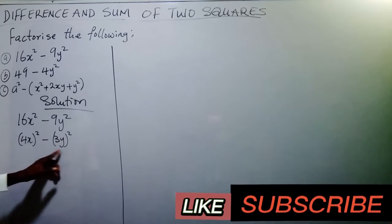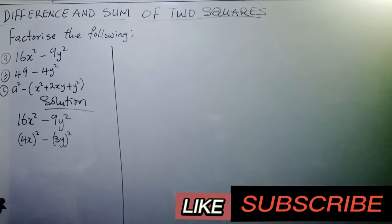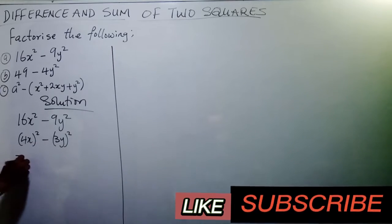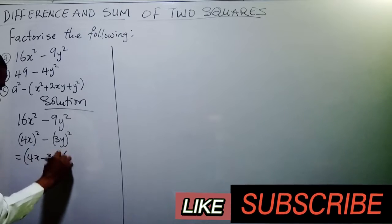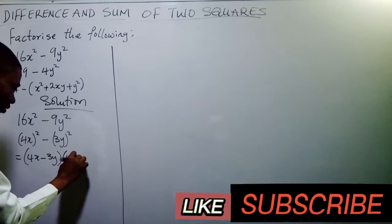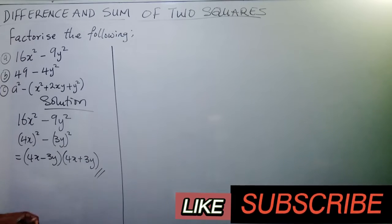Now, looking at this, apply the difference of two squares. What can we say this is? This is the same thing as saying 4x minus 3y, open bracket, 4x plus 3y. And that is our answer.